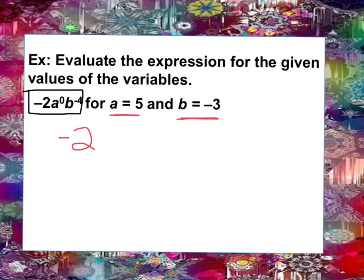a becomes 5 to the 0 power. Notice how I'm using parenthesis because I'm going to take out the a and substitute in a 5, and b is going to be negative 3 to the negative 4th power. You know what you could have done was rewrite the expression without the variables and just put parenthesis. That way you can easily substitute in the a and the b term.